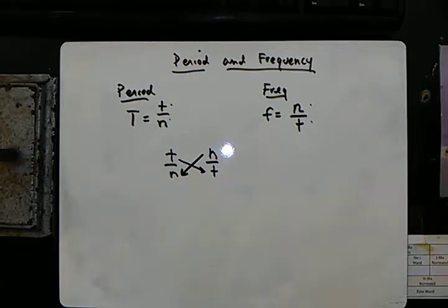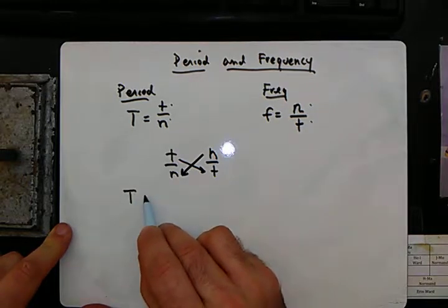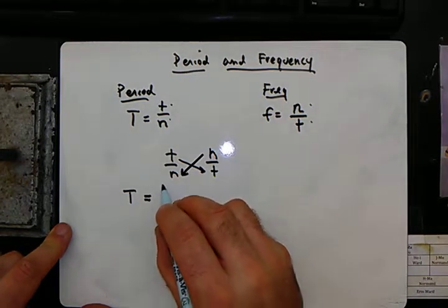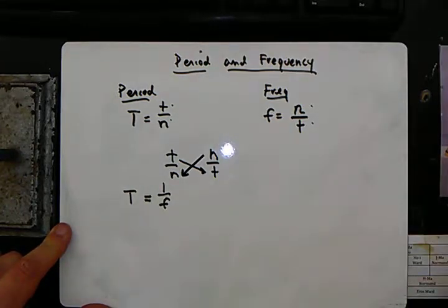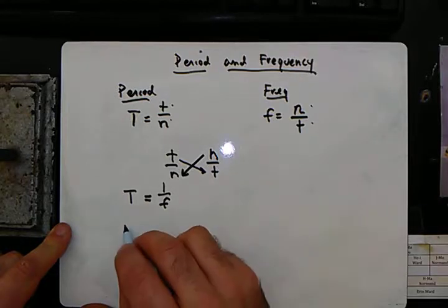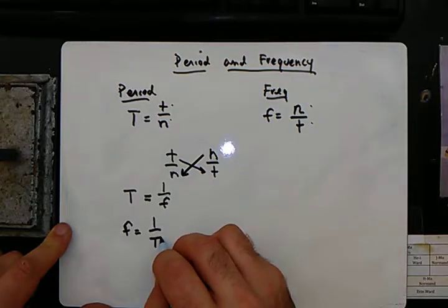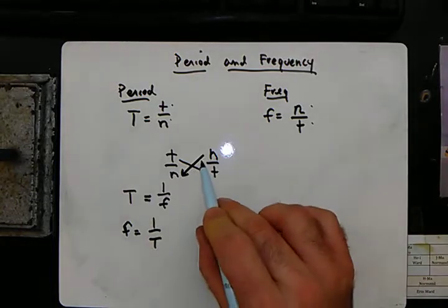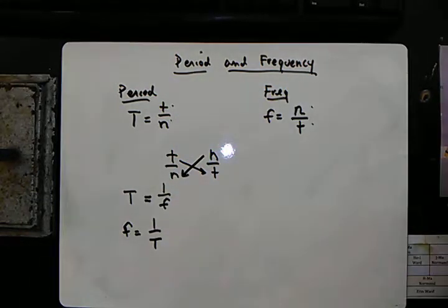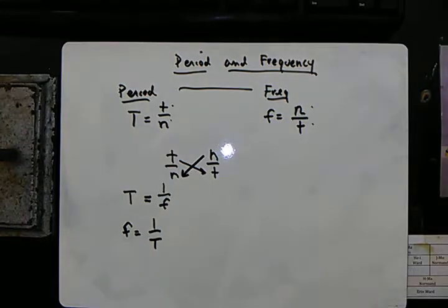So what I'm going to point out to you is that the period is equal to the inverse of the frequency, 1 over f. The frequency is equivalent to the inverse of the period. So we can safely say that because these two are the opposite of each other, the inverses of each other. So period and frequency have a relationship and that's an inverse relationship.